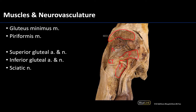Now it's time to discuss neurovasculature. To best understand this, we turn to the key of the hip — the piriformis muscle — which helps you determine what is what. Superior to the piriformis muscle is the superior gluteal neurovasculature: the artery, vein, and nerves are all in this region. The superior gluteal nerve will innervate the gluteus medius and minimus.